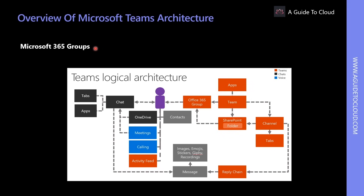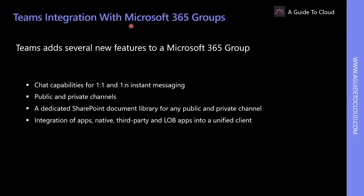Microsoft 365 Groups support two types of members: owners and members. Owners can manage group settings and membership, while members can participate with group resources and subscribe to updates. Resources included in Microsoft 365 Groups include a shared Outlook inbox, a shared calendar, a SharePoint document library, a Power BI workspace, a team, a planner, Yammer, roadmap, and more. Teams enhances these existing collaboration services with additional communication services such as persistent chat-based workspace and voice.